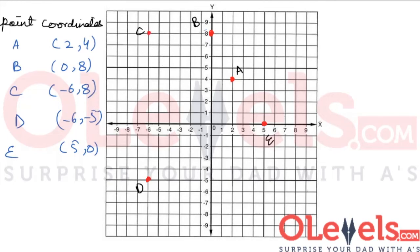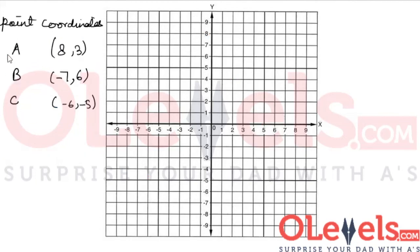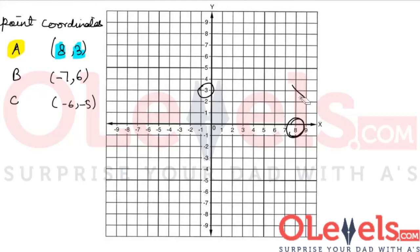Now let's try to go the other way around. We have three points and their coordinates, but we don't have them plotted on the graph. Given these coordinates, let's try to plot these points on the graph. The first point has an x value of 8 and a y value of 3. This right here is 8 on the x-axis, and right here we have 3 on the y-axis. So this is where point A will be plotted — let's plot and label it A.